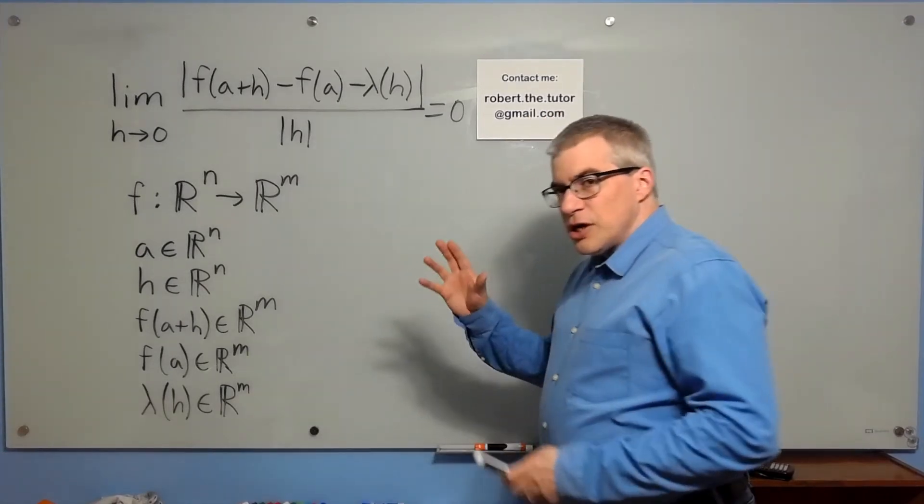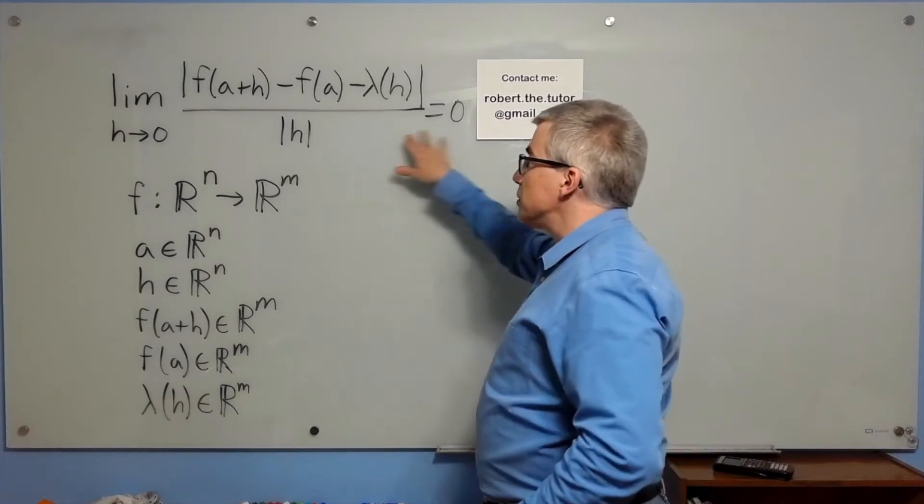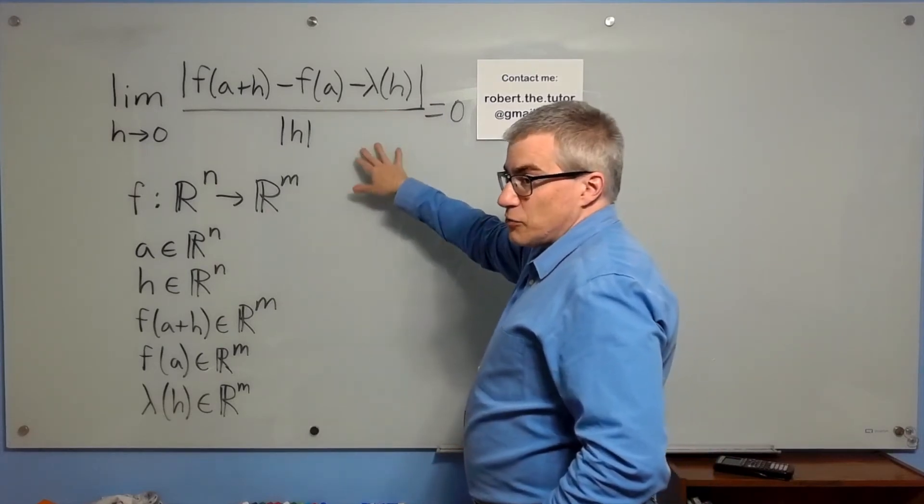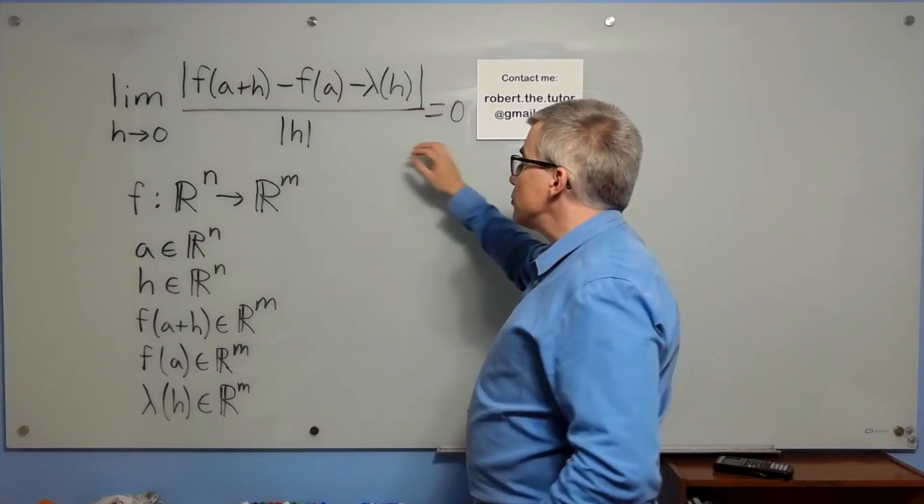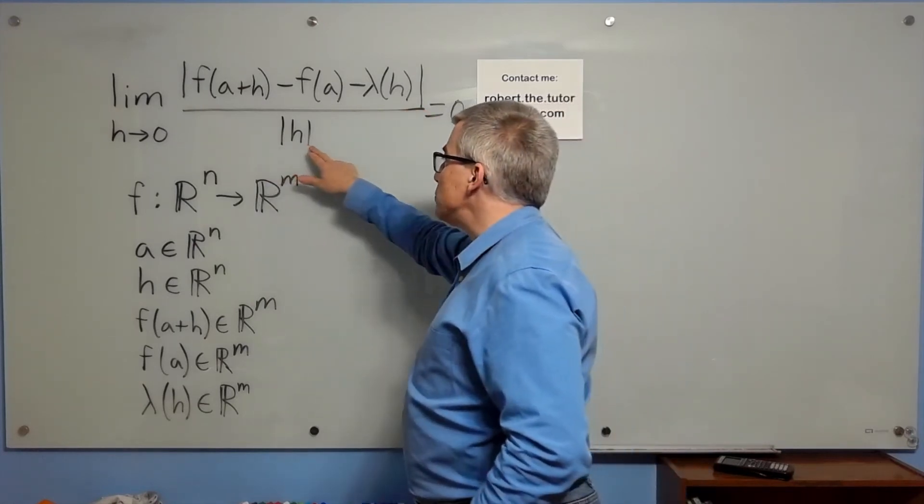The definition of a derivative is given here. You're taking the regular limit definition of a derivative and changing it to accommodate vectors, vectors in and vectors out. That's why we have these absolute value bars.